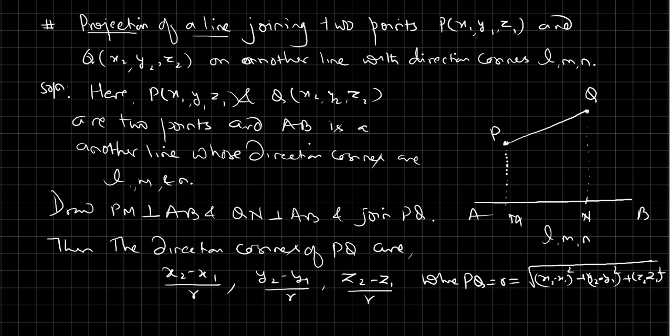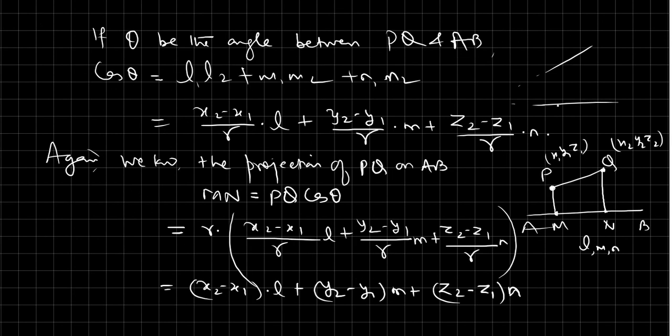So the projection of a line joining two points P(x1, y1, z1) and Q(x2, y2, z2) on another line with direction cosines l, m, n is: x2 minus x1 times l, plus y2 minus y1 times m, plus z2 minus z1 times n. The projection of PQ on line AB is given by this formula.